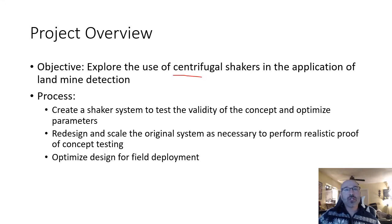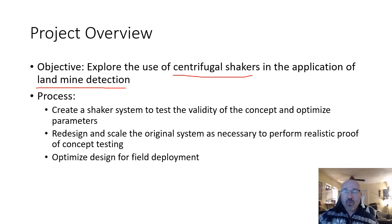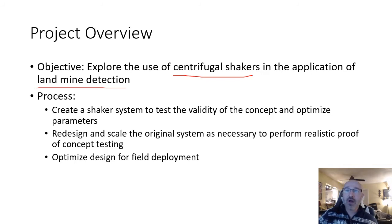The idea behind this project was to use centrifugal shakers in the application of landmine detection. We'd set these centrifugal shakers down on the ground where they would vibrate the ground itself based upon the speed, input amplitude, and values set for the two servo motors within the shaker. That would cause the ground to vibrate, which would then cause our buried IED or landmine to have small vibrations — and that's what we want to pick up with ground penetrating radar.